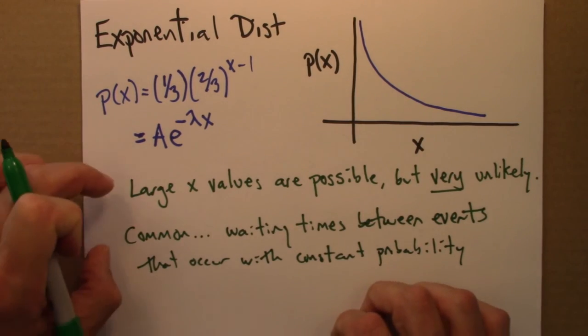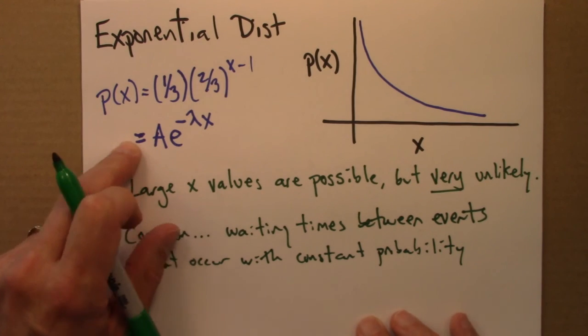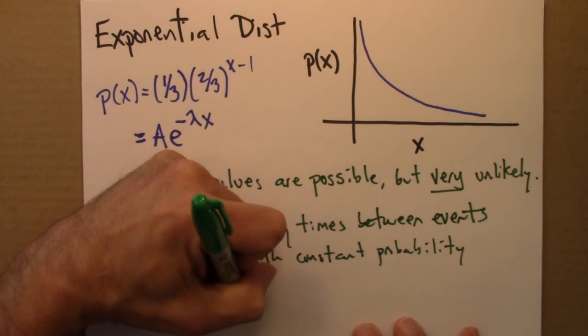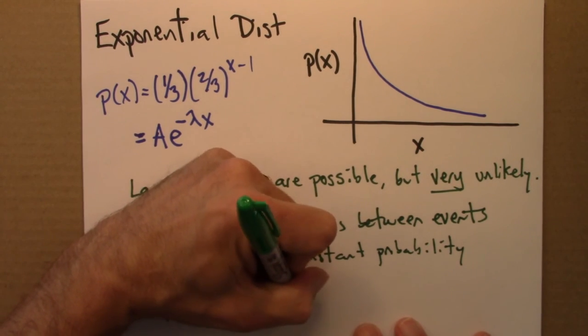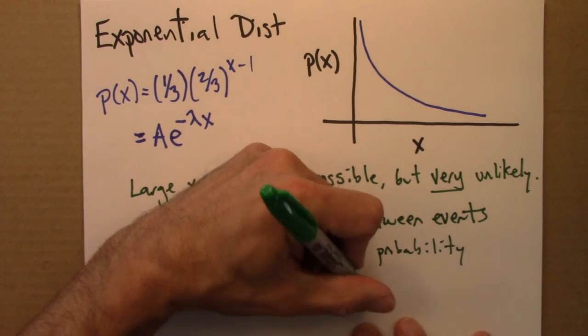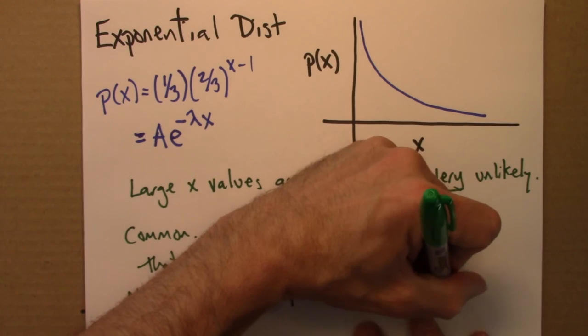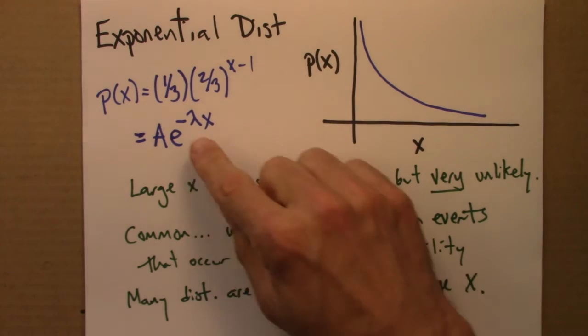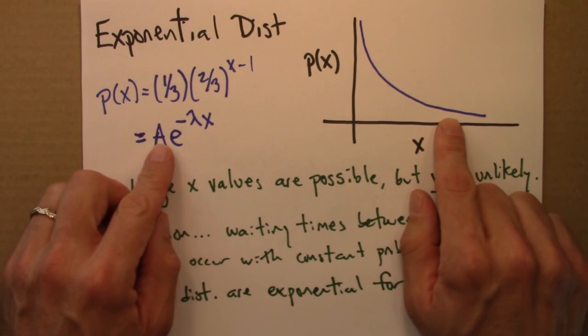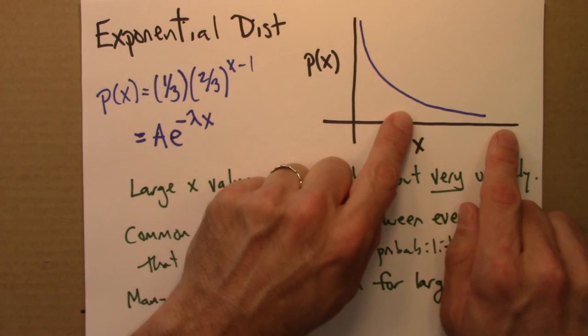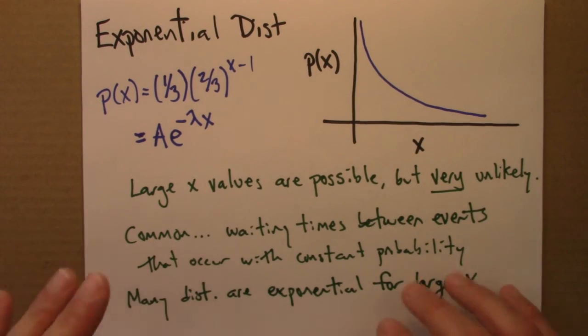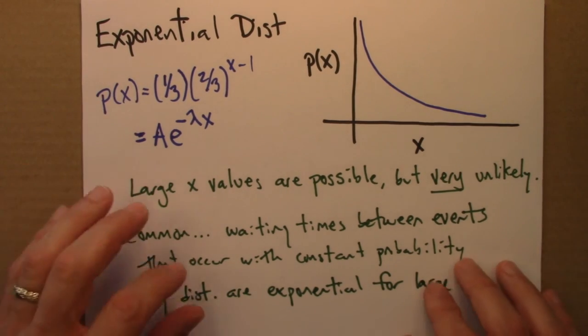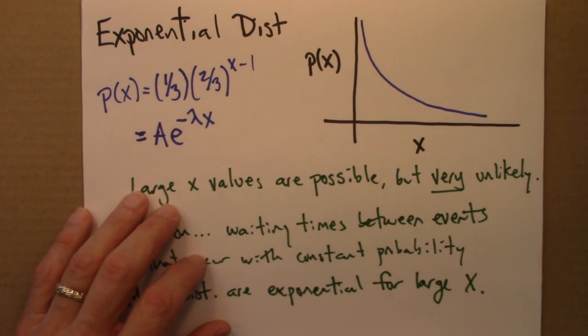And lastly, I should say, many distributions aren't exactly exponential. But they're exponential for large x. So many distributions are exponential for large x. By that I mean they don't follow this form exactly. But once x gets sufficiently large, they decay exponentially. So what we'll see in the next unit as we look at properties of power laws is that exponential distributions and power laws, even though they look very similar, have some very different important properties.